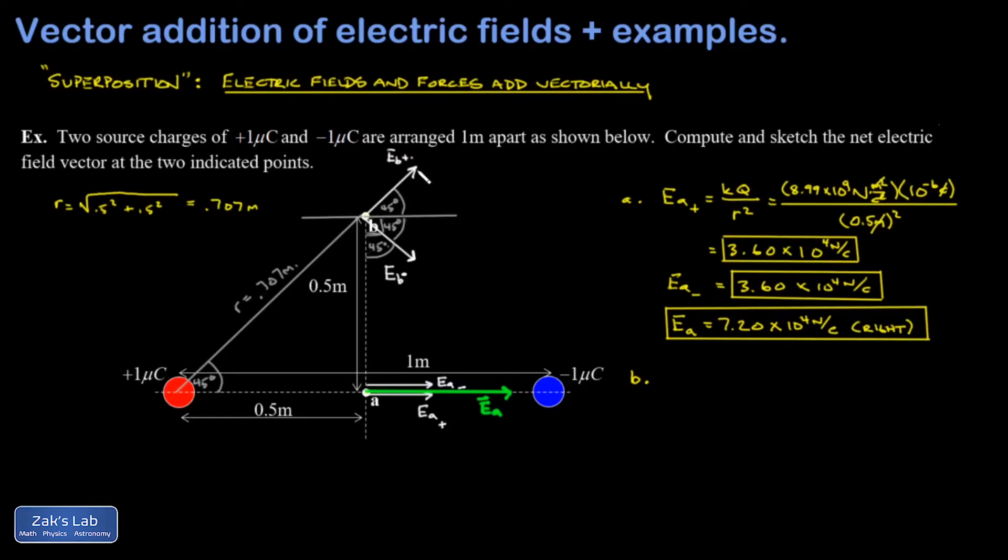And then I start looking at components. Well, my vertical components, first off, are going to have exactly the same magnitude, because the hypotenuse of each of these is the same. The two electric field contributions have the same magnitude, and the angles are the same. And so this I could call E_B plus Y, it's going to be a really complicated subscript, and E_B minus Y.